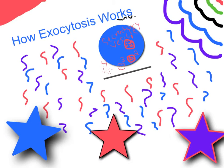Exocytosis is a process in the opposite order than endocytosis. It's a process in which intracellular vesicles move towards the plasma membrane and out. And that is how exocytosis works.